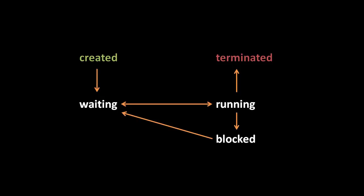Don't get confused — both the blocked and waiting states involve waiting, but only in the waiting state will the scheduler select the process to run. In the blocked state, the process waits until the OS puts it back in the waiting state. There are several reasons to block and unblock a process, but the most common reason is because that process has to wait for some slow device in the system.